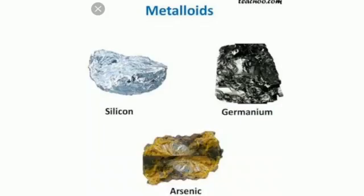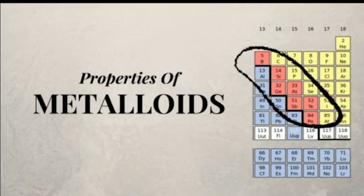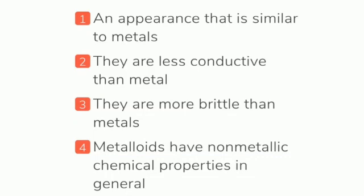The third category is metalloids. Metalloids are elements that have the properties of both metals and non-metals. Do not use the word 'mixture' for metalloids, as mixture in chemistry is an impure substance and metalloids are elements which are pure substances — we can also call them semi-metals. Some examples are silicon, germanium, arsenic, and antimony. They have an appearance similar to metals, but they are less conductive and more brittle than metals. Metalloids have non-metallic chemical properties in general.